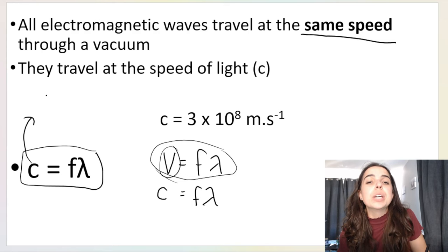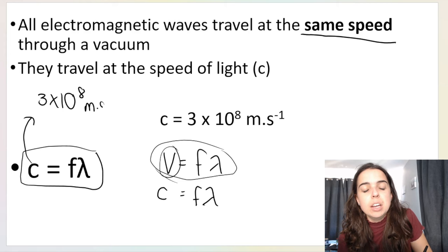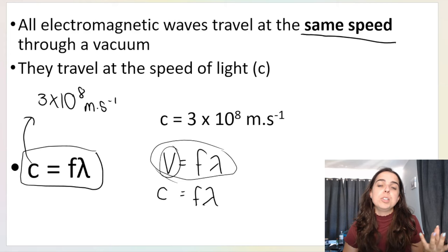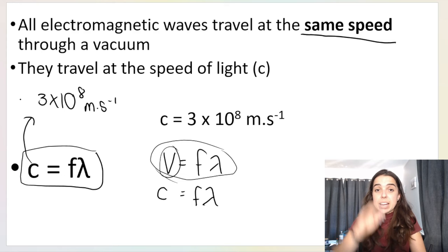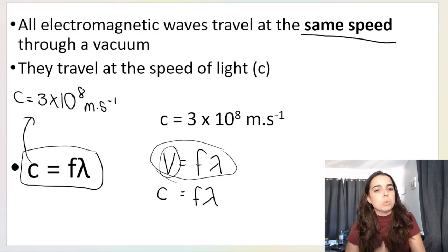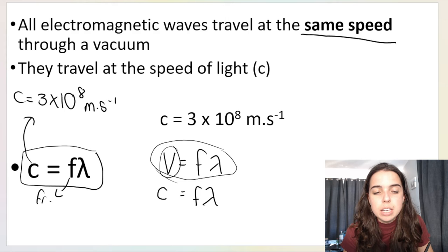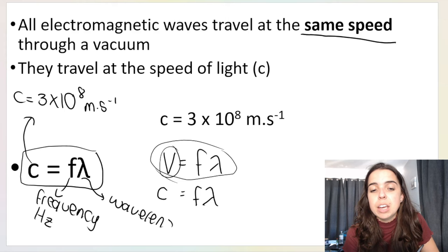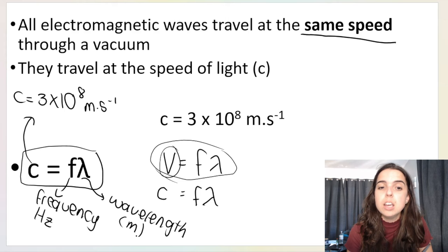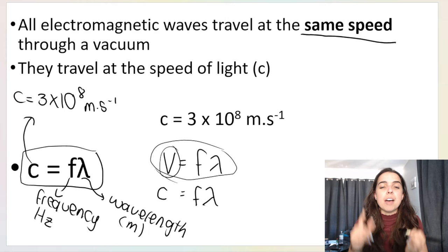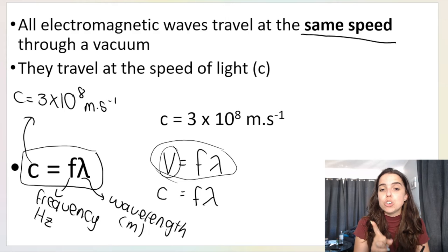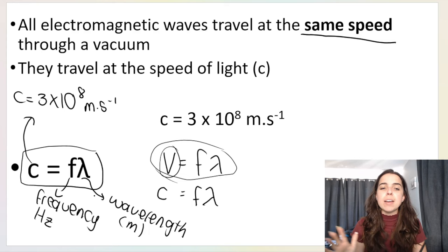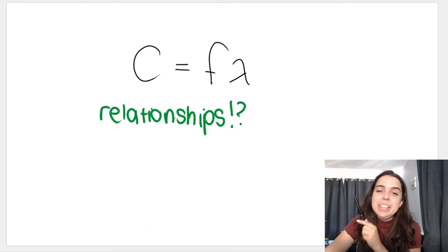C is a constant, which means it stays the same. When you do your physics exams you will get a data sheet listing constants, and one of them will be c = 3 × 10⁸ m/s. In the formula c = fλ, f is frequency measured in hertz, and λ (lambda) represents wavelength measured in meters — remember to convert to meters. This formula lets us calculate either the frequency or the wavelength of an electromagnetic wave.